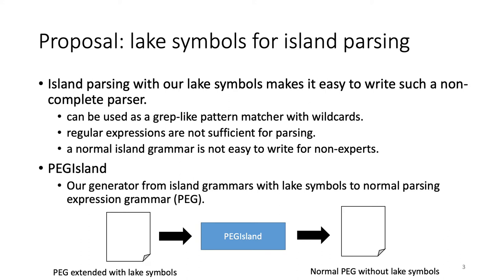We propose lake symbols for island parsing that make it easy to write such a non-complete parser. An island parser with lake symbols can be used as a grep-like pattern matcher with wildcards, but regular expressions are not sufficient for parsing programs. So our island parsing is based on a PEG, parsing expression grammar, to handle the recursive structures in programming languages. Writing a normal PEG for island parsing is not easy for non-experts, but with lake symbols the user can easily write a grammar for island parsing. We also propose PegIsland, which implements our lake symbols — it takes an island grammar with lake symbols and generates a normal PEG without lakes, so existing parser generators for a PEG can be used to obtain a parser.